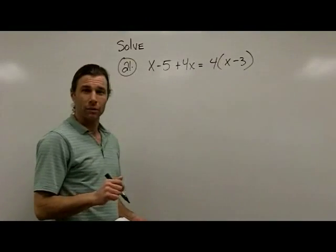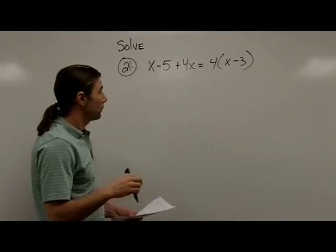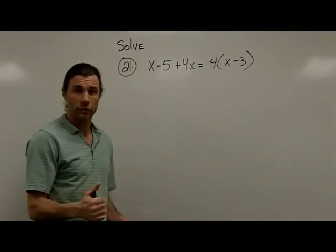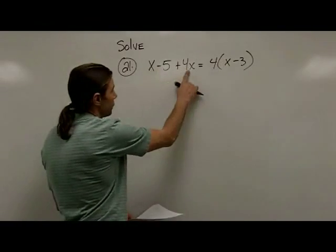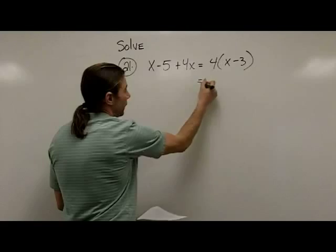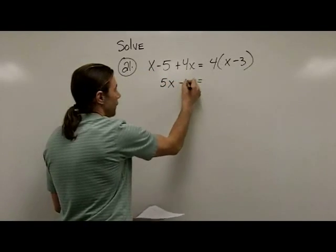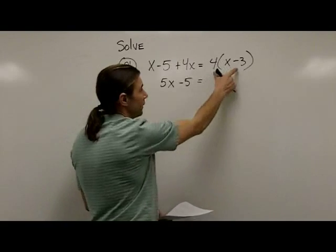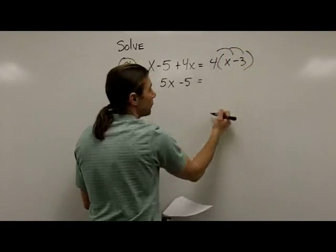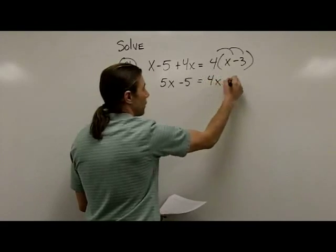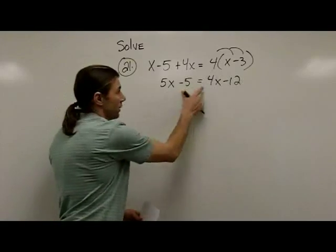In the next problem, I'm showing how to solve an equation. I'm going to do problem number 21. The first step is to see if I can simplify either side. In this case, I can. On the left side, I have like terms x and 4x. If I combine x and 4x, it gives me 5x. On the right side, I can simplify by distributing this 4, which gives me 4x minus 12.